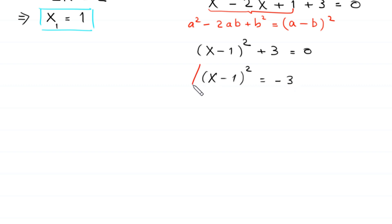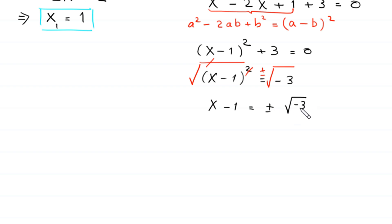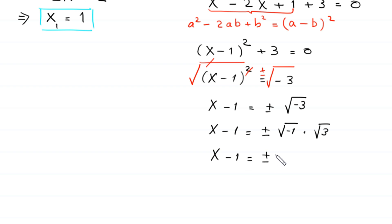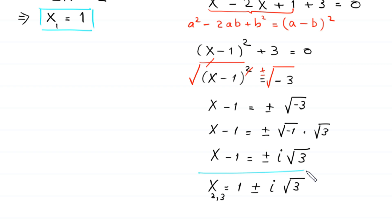So x squared minus 2x plus 1 becomes x minus 1 whole squared, equal to negative 3. Taking the square root of both sides, x minus 1 equals plus or minus the square root of negative 3, which is the same as root negative 1 times root 3. So x minus 1 equals plus or minus i times root 3, giving x equals 1 plus or minus i times root 3. These are the second and third values of x. From case 1 we get three solutions: 1 and 1 plus or minus i times root 3.